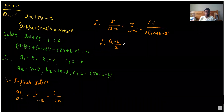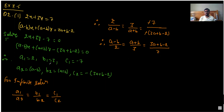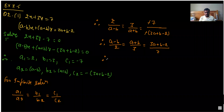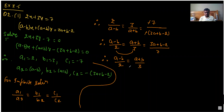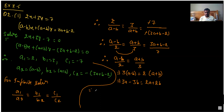Therefore, considering the first two ratios, we get A minus B by 2 equal to A plus B by 3. After cross multiplying, we get 3 times of A minus B equal to 2 times of A plus B, giving us 3A minus 3B equal to 2A plus 2B. So 3A minus 2A equals A, and minus 3B minus 2B equals minus 5B, giving A minus 5B equal to 0. Consider this as equation number 1.